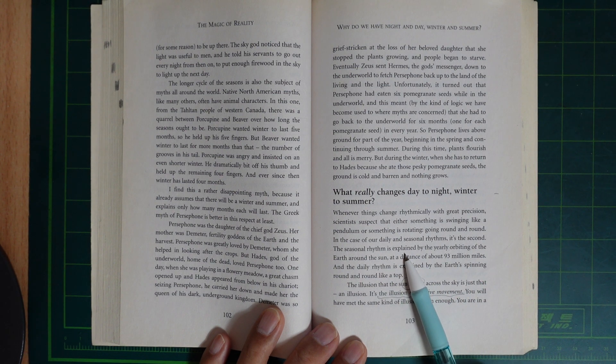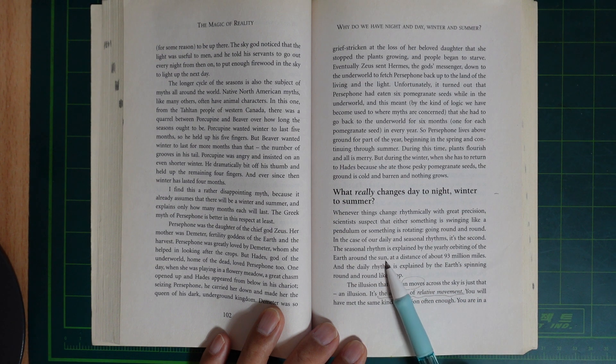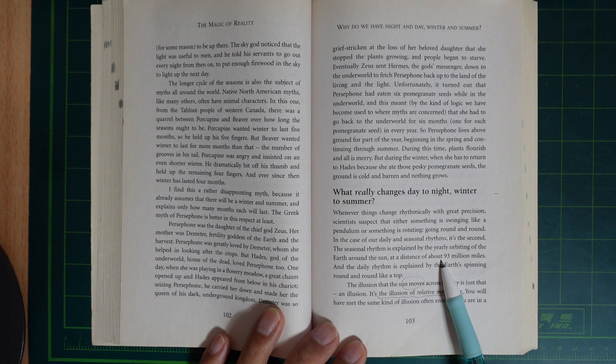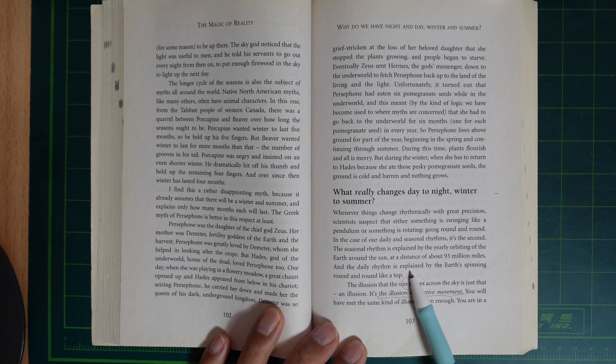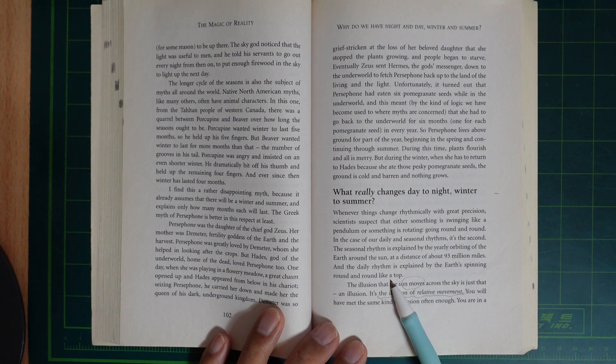The seasonal rhythm is explained by the yearly orbiting of the earth around the sun at a distance of about 93 million miles. The daily rhythm is explained by the earth's spinning round and round like a top.